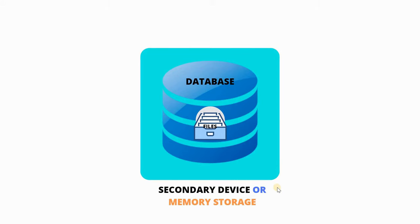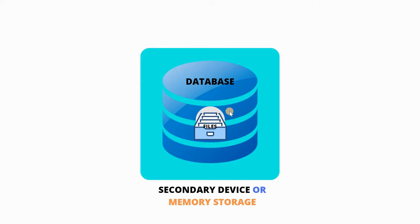Whenever we want to save our data permanently for future reference, us data ko hum secondary storage mein database ke andar store karate hain. To yeh hai memory storage jahan pe mujhe data ko store karna hai. Maine ek file banayi, uske andar data ko store kar diya, aur ek aur file banayi uske andar data store kar diya. In saare files ke collection ko database kehte hain — database wo jagah hai jahan pe saare logically related data ikattha hokar store hote hain.